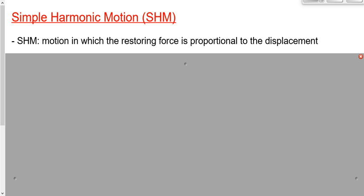What do we mean by that — motion in which the restoring force is proportional to the displacement? I want to tell you what a restoring force is first. If I stretch an elastic, it requires a certain force, but that elastic pulls back on my hand. The elastic pulls back so that ultimately its goal is to get back to where it was — its natural or equilibrium position. As I stretch it, it's pulling back so that it will get to its natural position again. If I let it go, it won't take very long for that elastic to get back to normal. That's a restoring force — a force pulling it back to its natural or equilibrium position.